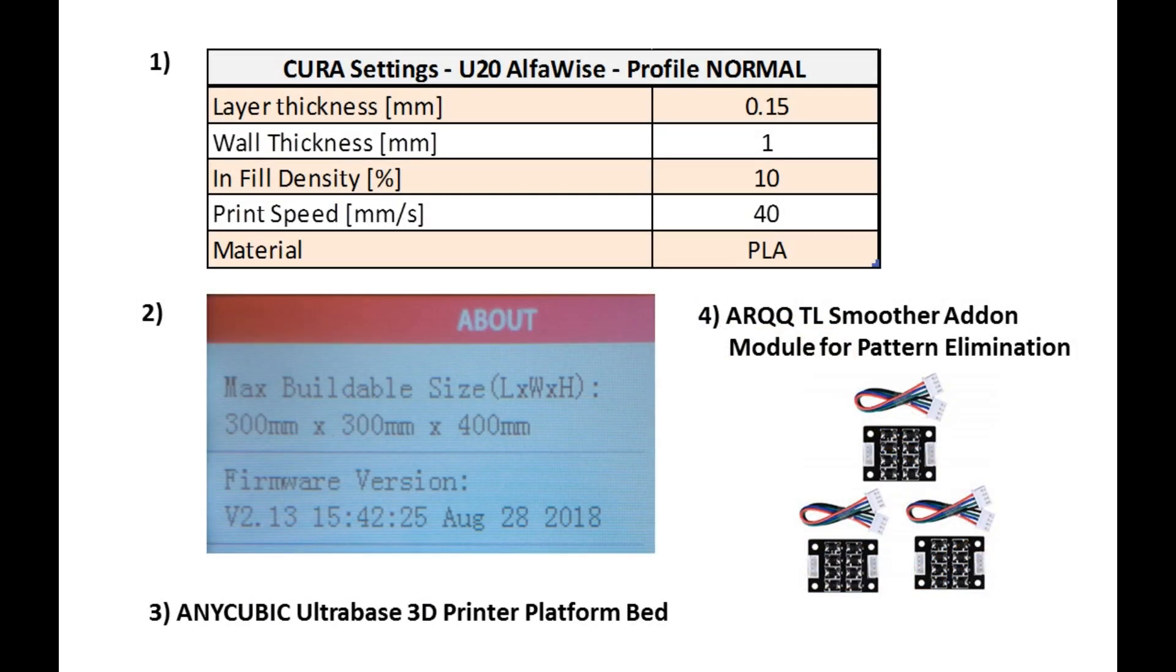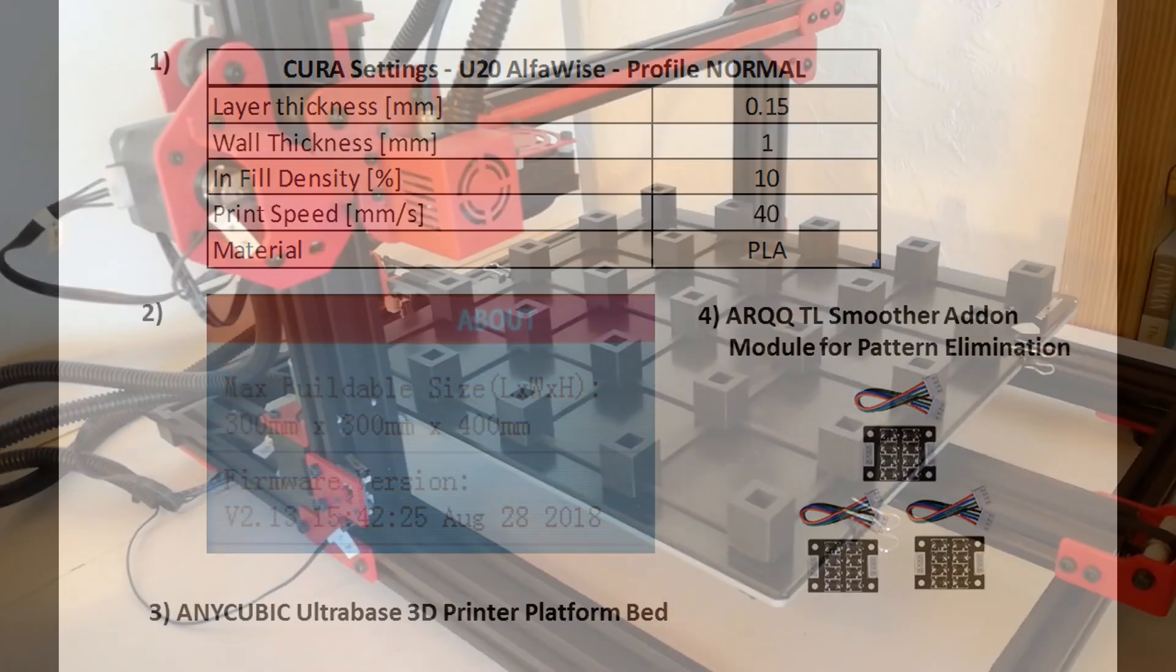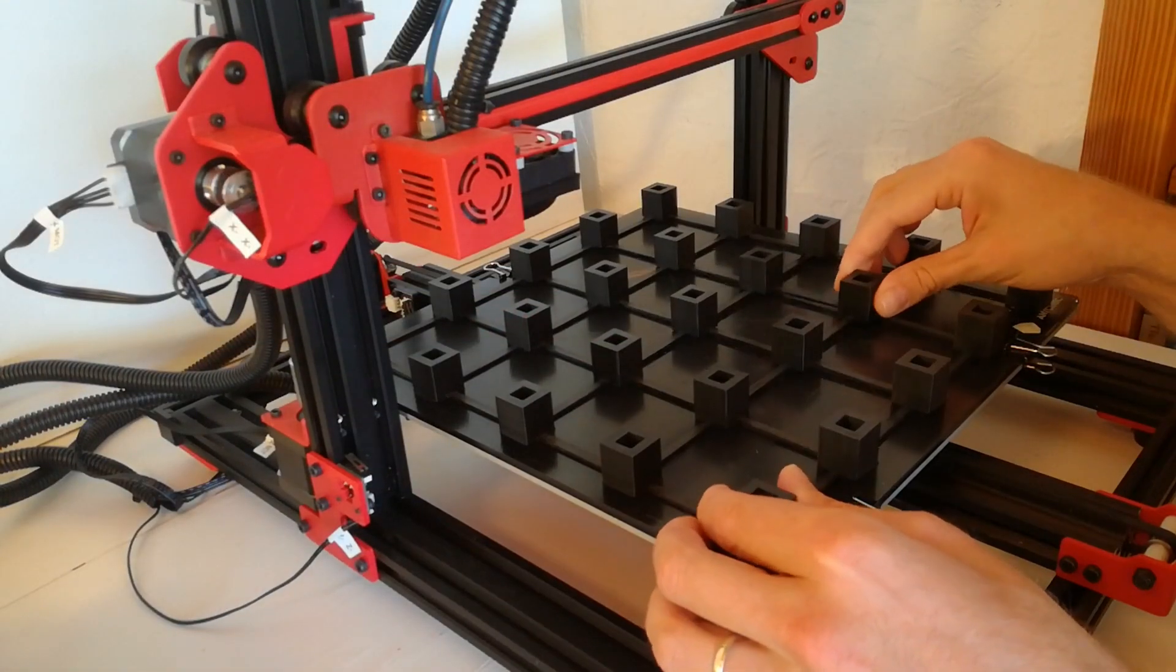So the part is printed with standard settings provided by Cura software for U20 Alfawise. Material is PLA. The part itself looks like this.